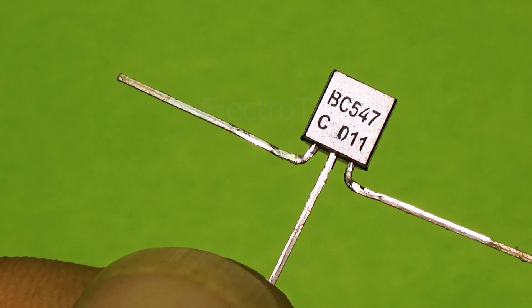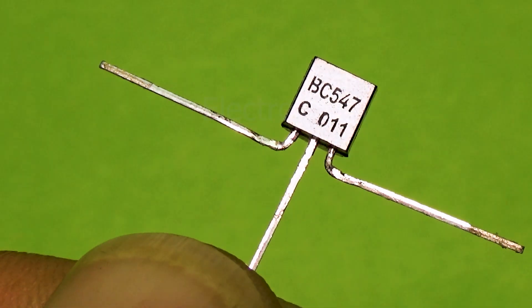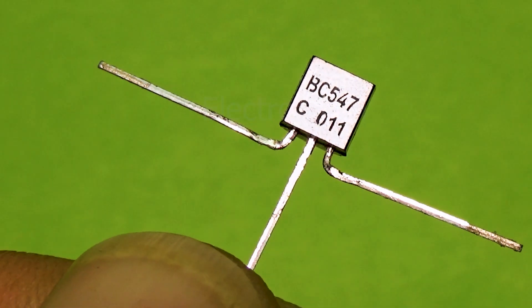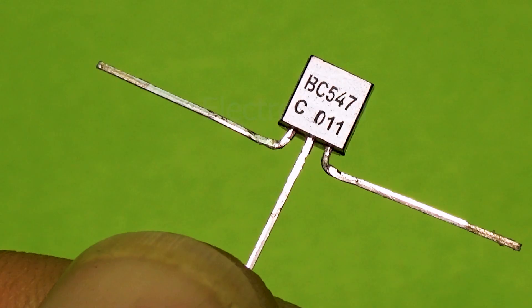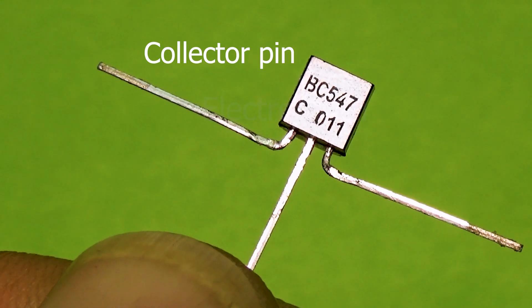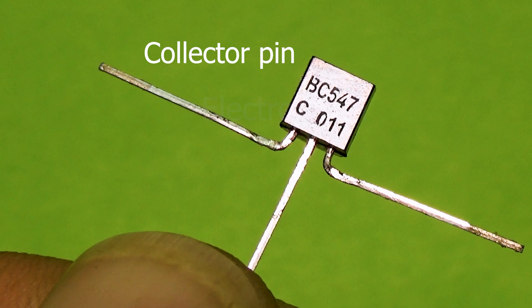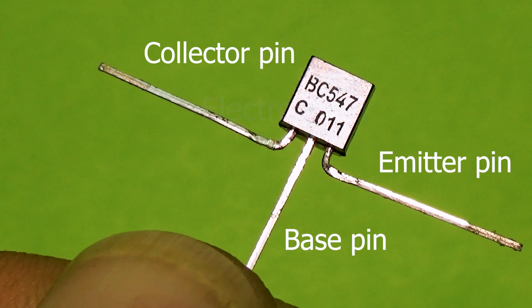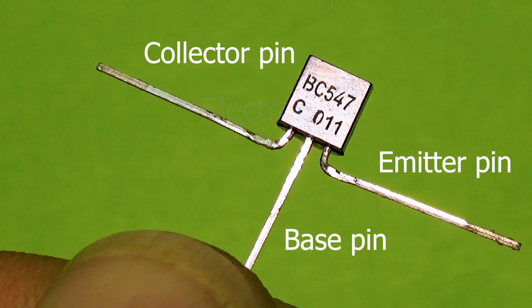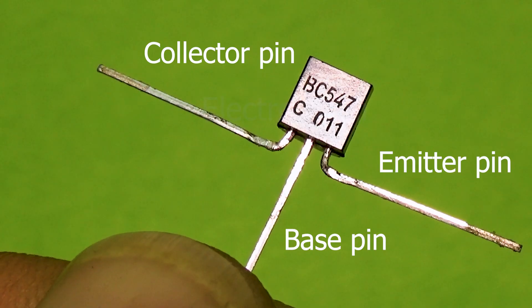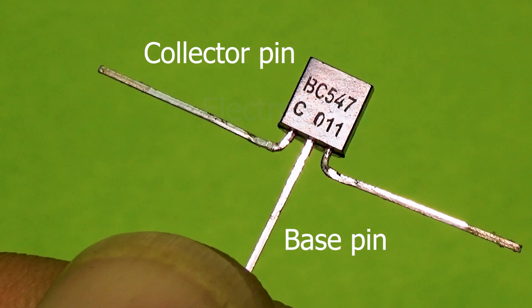Now let's understand how the circuit works. First of all, you should understand that a transistor is an electronic component with three legs. If the side with the numbers written on the top of the transistor is facing upward, then the collector pin is on the left side. The base pin is in the middle, and the emitter pin is on the right side. However, this pin configuration can vary, so it's always a good idea to check the datasheet of your transistor before wiring it.